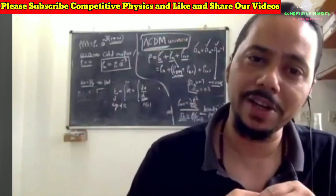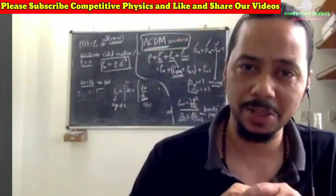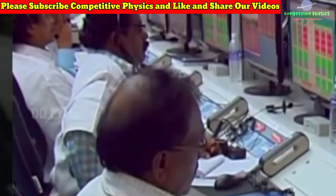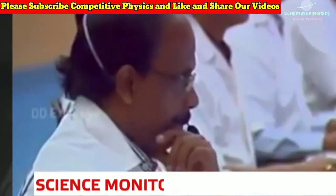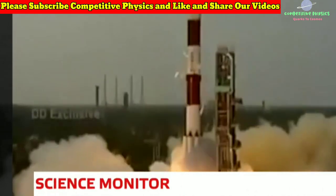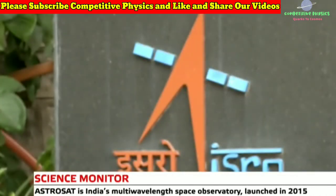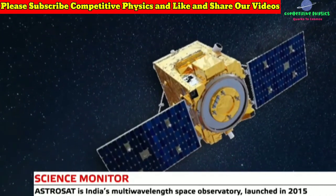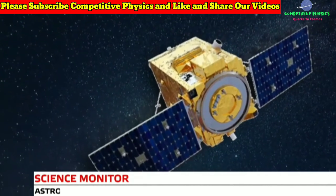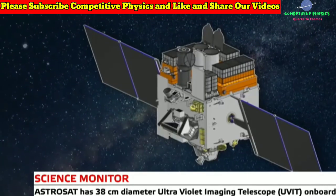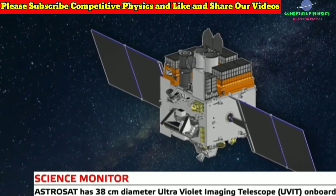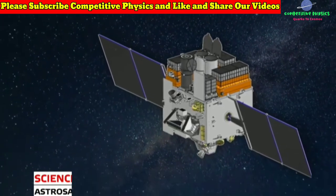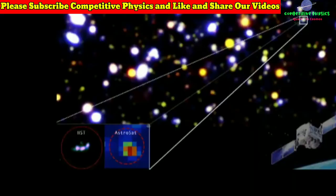AstroSat was launched on 28 September 2015 by the Indian Space Research Organization. It has a 38-centimeter diameter ultraviolet imaging telescope on board which is capable of simultaneous imaging in far and near ultraviolet bands with a wide field of view.